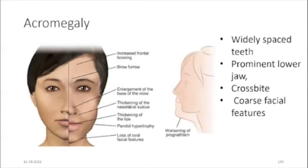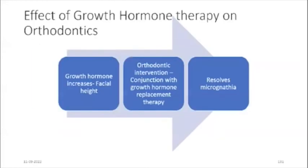Acromegaly is most commonly seen due to a pituitary adenoma and can be seen in association with McCune-Albright syndrome and neurofibromatosis type 1. Features include widely spaced teeth, prominent jaws, lower jaw prognathism, cross bite, and coarse facial features. The effects of growth hormone therapy on orthodontics include increased facial height, and because of a lesser effect on facial width, jaw alignment will also be affected. Orthodontic intervention involves conjunction with growth hormone replacement therapy, which should resolve the micrognathia.